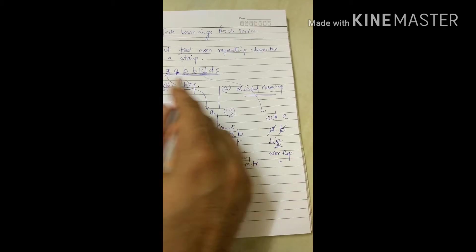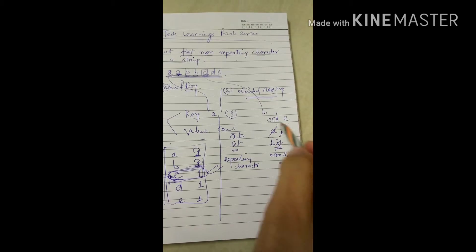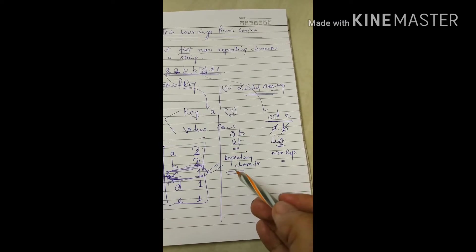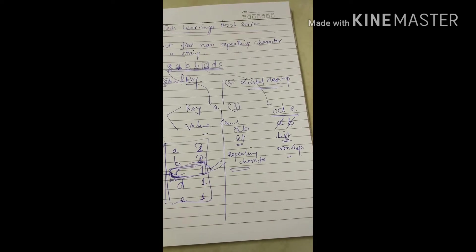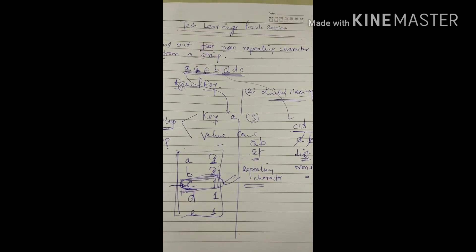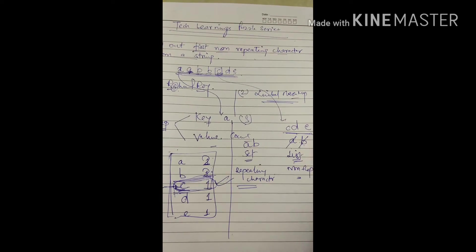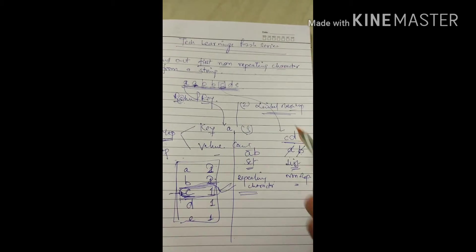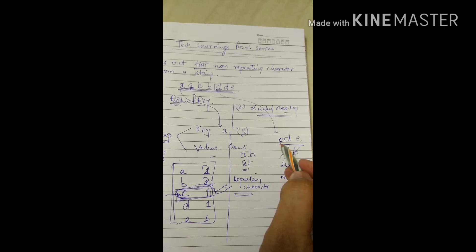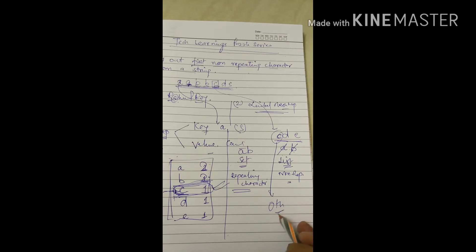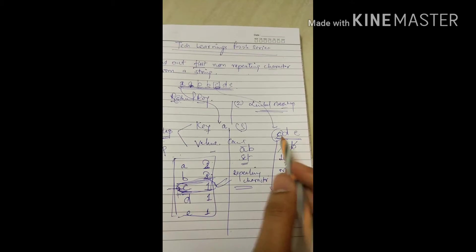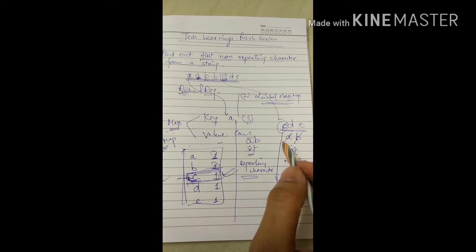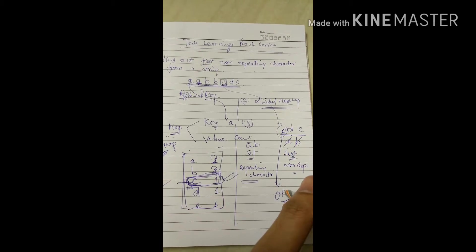At the end, the list contains all the non-repeating characters and the set contains the repeating characters. This approach is also useful if someone asks you to segregate repeating and non-repeating characters from a string. For our problem — finding the first non-repeating character — the character at the zeroth index of the list is the answer. That is our first non-repeating character.